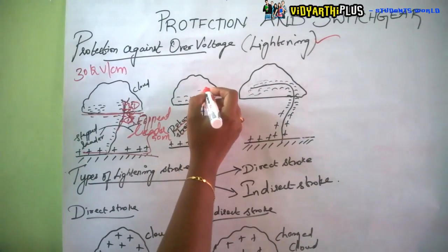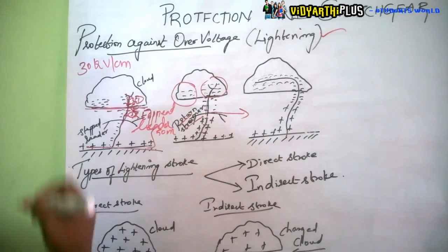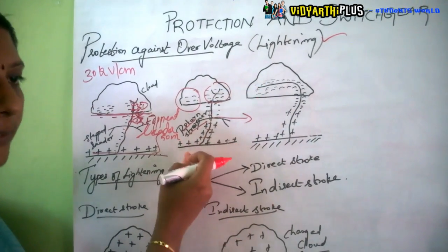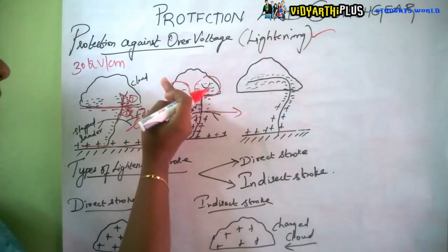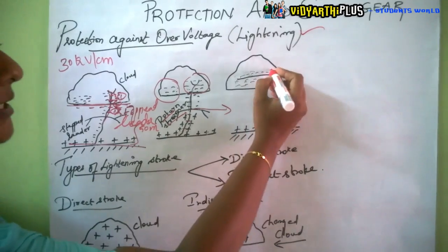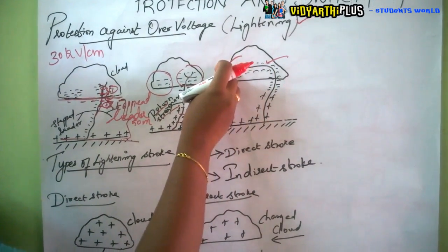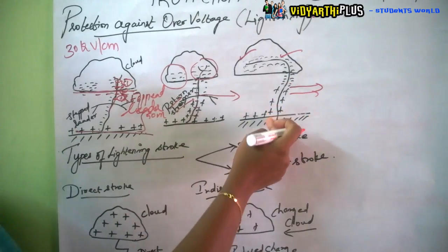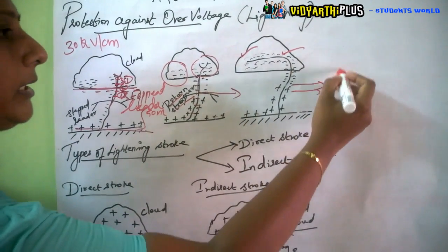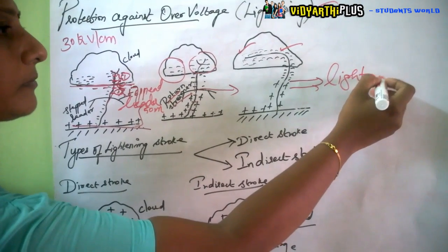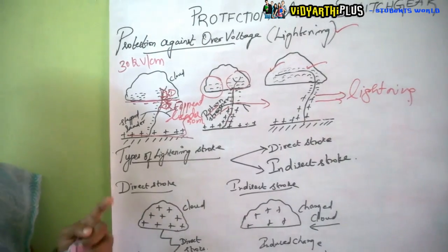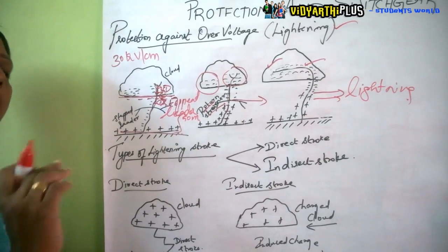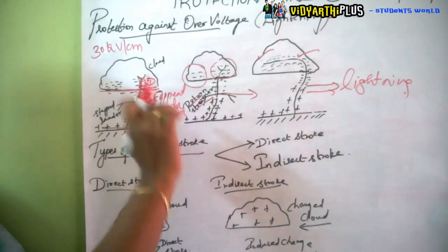When one set of charge centers is exhausted, the process takes charges from a second charge center, and lightning occurs again when the stepped leader and return streamer join. To summarize: lightning occurs when the potential difference exceeds 30 kV per centimeter, and only when the return streamer and stepped leader join together.